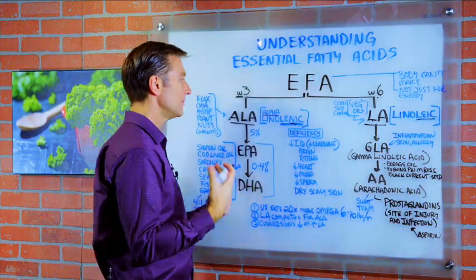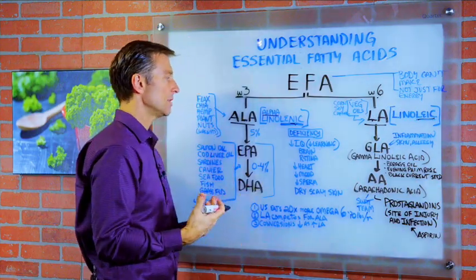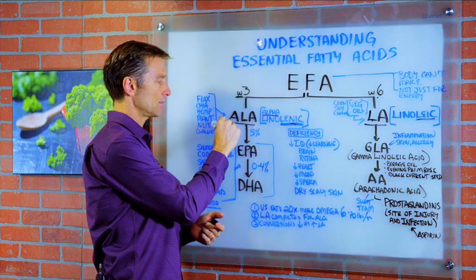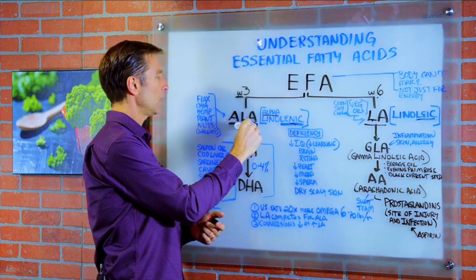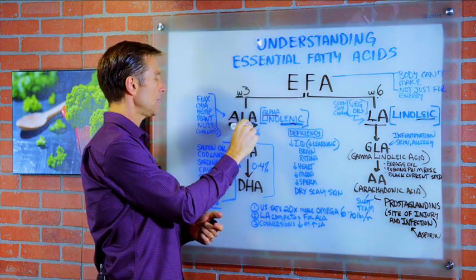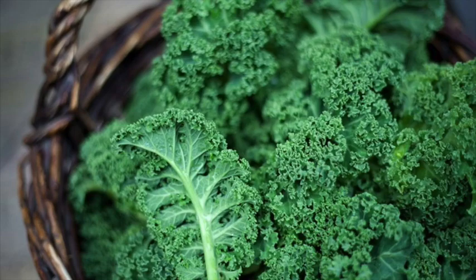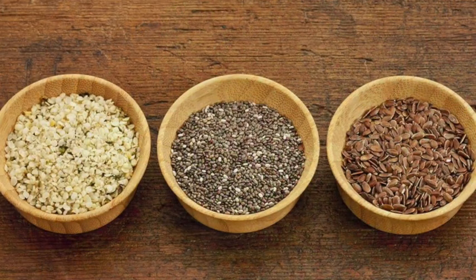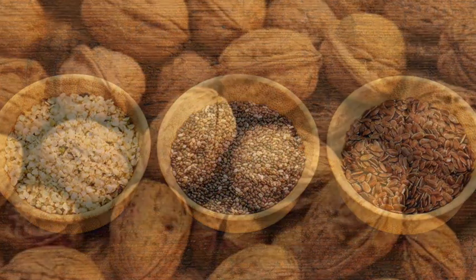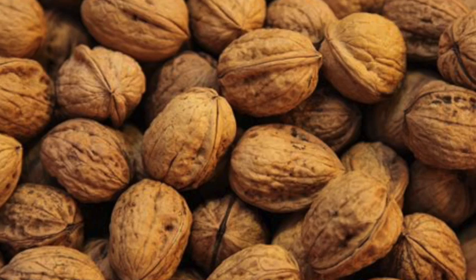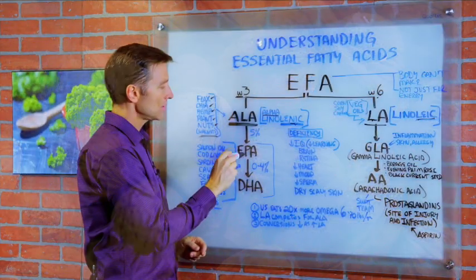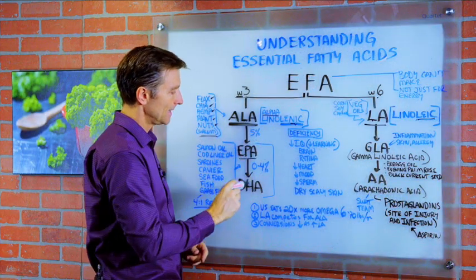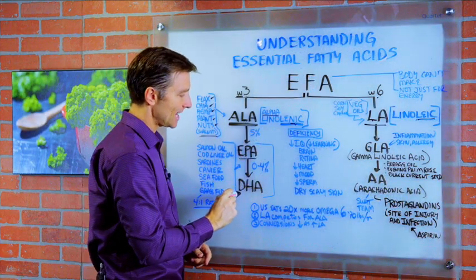What type of foods do you have to eat to get ALA, the omega-3? This mainly comes from leafy greens, flax, chia, hemp seed, plants and nuts — especially walnuts.